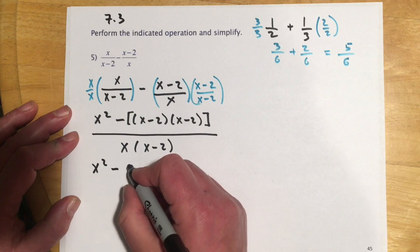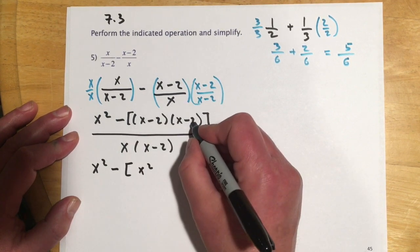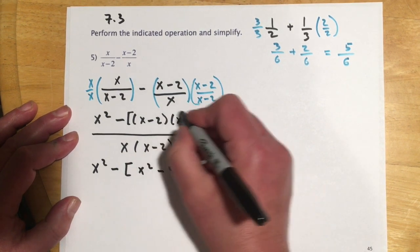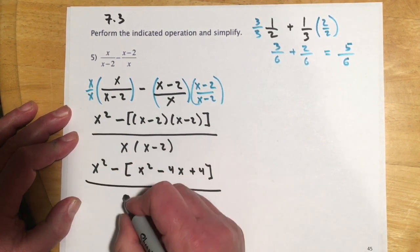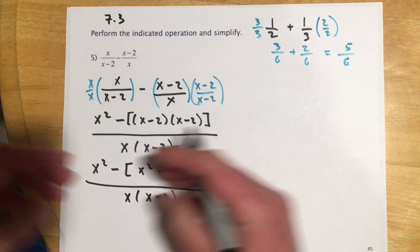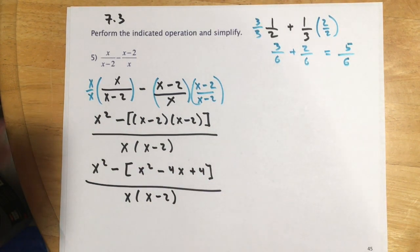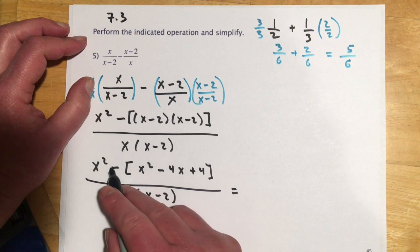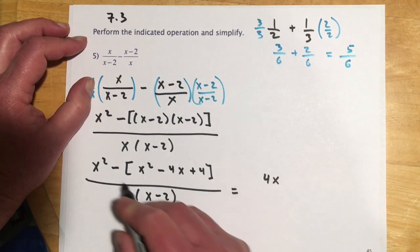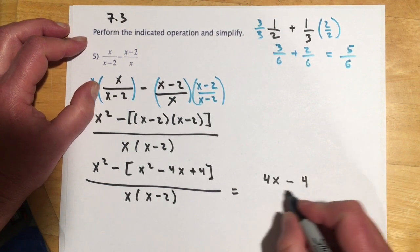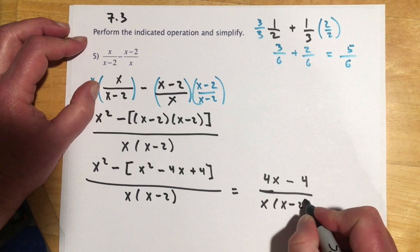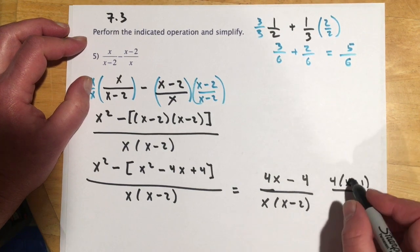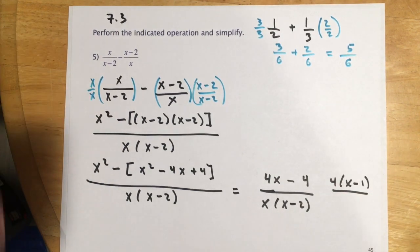Working out the numerator: x times x gives x², and FOILing the subtracted term gives x²-4x+4 (with the negative distributed). So we have x² minus (x²-4x+4) over x(x-2). The x² terms cancel, leaving 4x minus 4 over x(x-2). We could factor the numerator as 4(x-1), but since nothing cancels with the denominator, there's no reason to — though we do need to check.